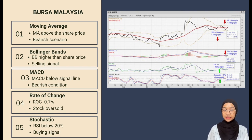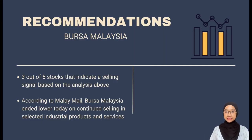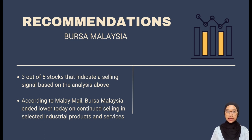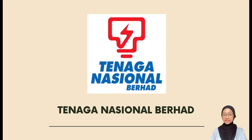The Stochastic indicator for Bursa Malaysia on 18 January 2023 is at 18.2%, which is lower than 20%, indicating a buying signal. For the recommendation, 3 out of 5 indicators indicate a selling signal. According to Malay Mail news, Bursa Malaysia was lower today on continued selling in selected industrial products and services, telecommunication and media counters, despite regional markets closing mostly higher.